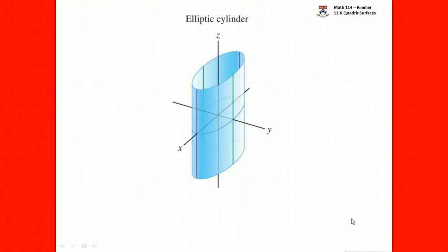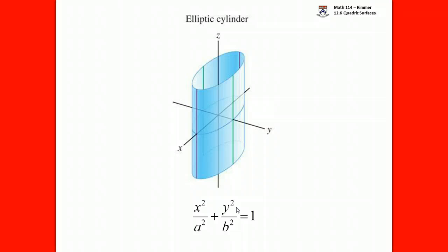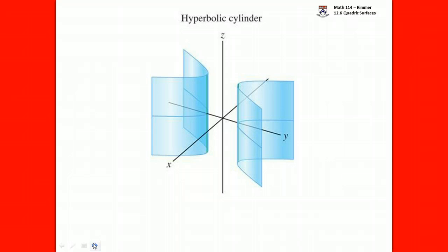Next up is cylinders. As soon as we allow one variable to be missing, we have a cylinder. The equation of an ellipse in 2D — with z not part of the equation, z is allowed to be anything. In the x-y plane we get an ellipse opening plus or minus a in x and plus or minus b in y, but z can be anything, giving us an elliptic cylinder. If I want it to open in y, then y is the missing variable; if I want it to open in x, then x is missing.